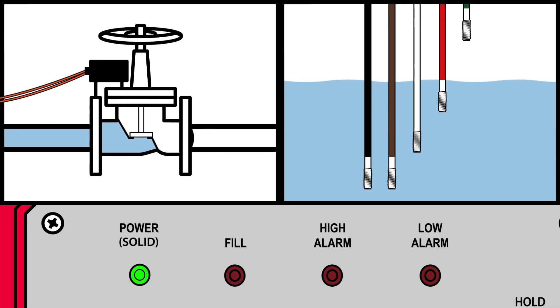Operationally, the valve opens when water drops below the white rod, and the LED for fill turns on, along with the respective relay and dry contact. The valve closes when the water reaches the red sensor rod.